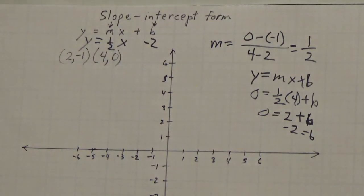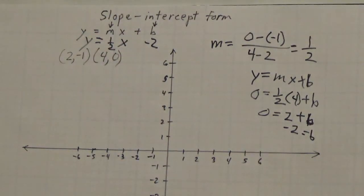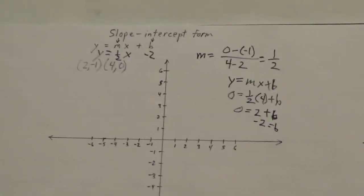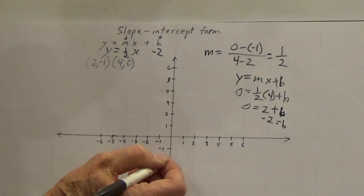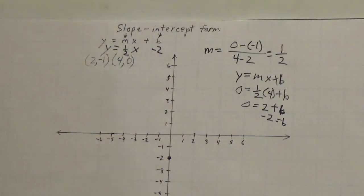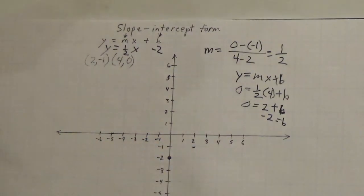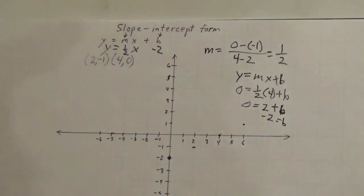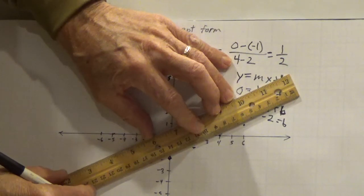That's the equation in slope-intercept form. The y-intercept is negative 2 — we have this point right down here. The slope is 1 half, that means it goes 1 up, 2 over. So 1 up, 2 over would be right here. Another 1 up, 2 over would be here. Another 1 up, 2 over would be here. Connect the extreme points and the others should fall in, if you're correct.